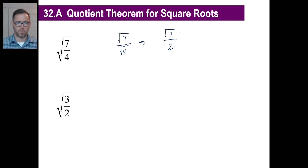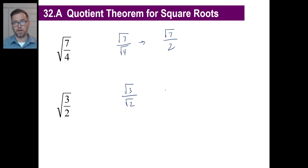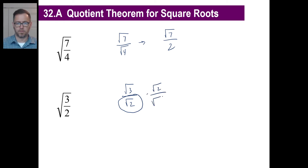How about this one? The square root of three over two. That's going to be the square root of three over the square root of two, right? Now, we don't want to leave it like this. Remember how we have to make the denominator a rational number? That's not a rational number. So, we need to do the square root of two on both top and bottom. That gives us the square root of six on top and two on the bottom.